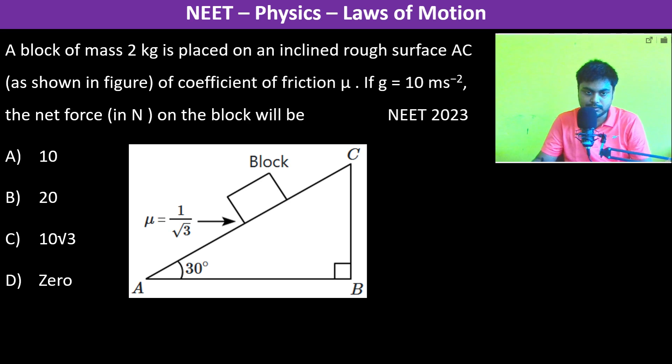So this is mg. We resolve it as mg. This is 30 degree, so this is 90 degree. Therefore this becomes 30 degree. So this is mg cos 30 degree which is equal to m is 2 into 10 into root 3 by 2, so therefore 10 root 3 Newton.